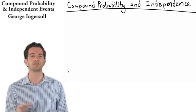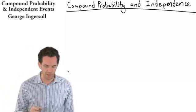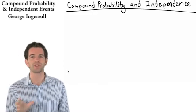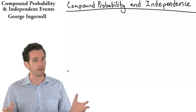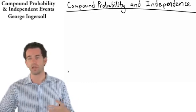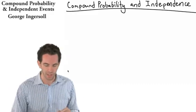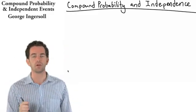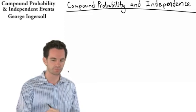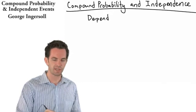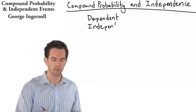On the surface, making this calculation is fairly simple. All you're really going to do is multiply the two probabilities together. The challenge is that sometimes you're going to have to make an adjustment to those probabilities because they have some sort of influence on each other. This all has to do with whether the two events are dependent or independent. Dependent events do influence each other's outcomes, and independent events do not — meaning if event A occurs, it has no bearing on event B.